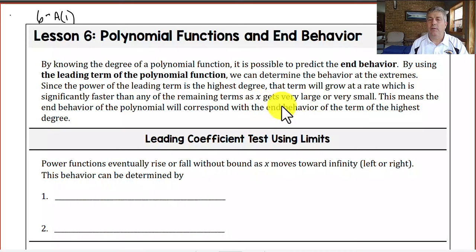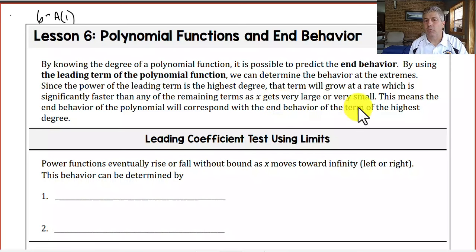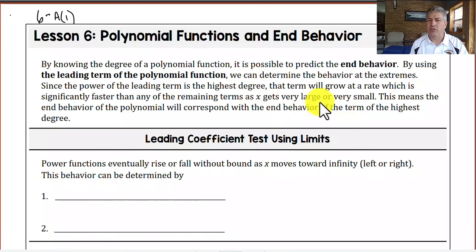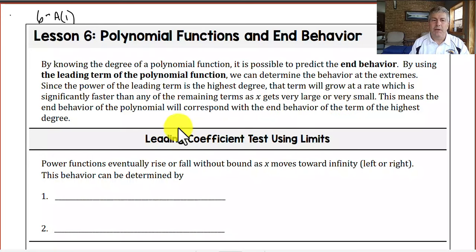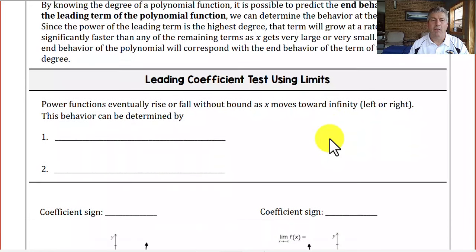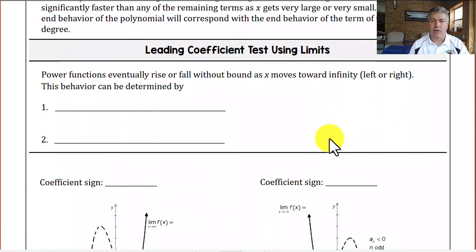And that's going to be a theme — what happens when x gets really large, what happens when x gets really small, or when x approaches a particular value. We'll do a lot of work with x going very large positive and very large negative. This means that the end behavior of the polynomial will correspond with the end behavior of the term of the highest degree.